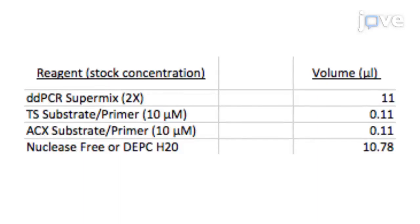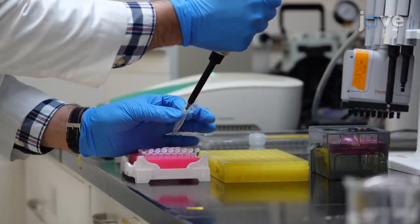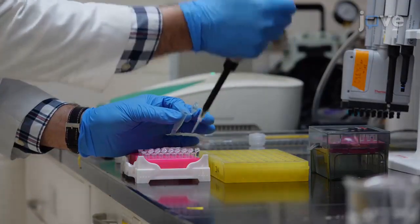Prepare a master mix in a microcentrifuge tube for the DDTRAP and keep it at room temperature. Pipette 19.8 microliters of DDTRAP master mix into each PCR tube.